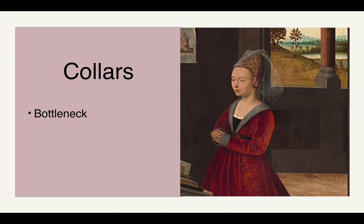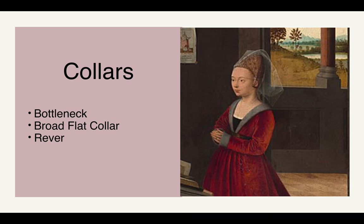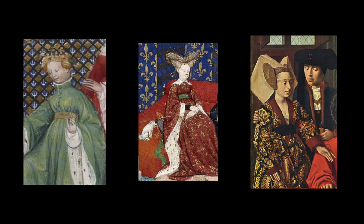There are three major types of collars we see on women. One is the bottleneck, one is a broad flat collar — which looks as though the bottleneck is unbuttoned and laid flat against the shoulder — and then we also have the revere, which is a close V-necked collar going from nothing at the high belt line to three inches at the shoulder and around the back. The bottleneck is earlier Renaissance; we don't see as much of it in the high Renaissance.